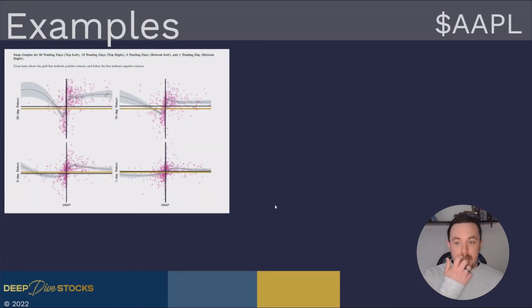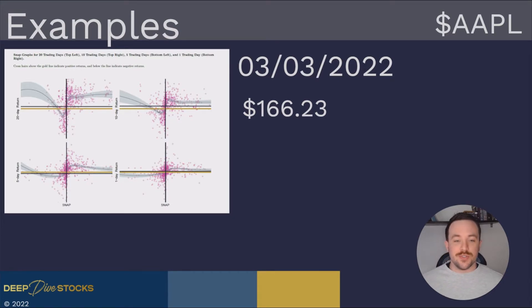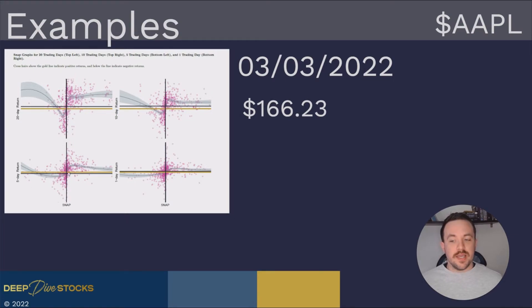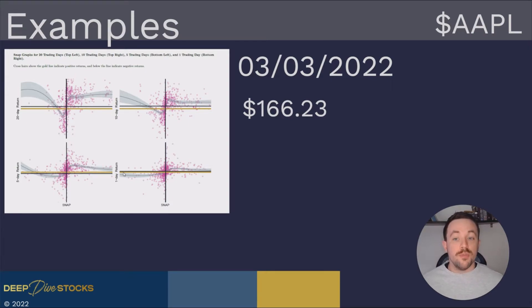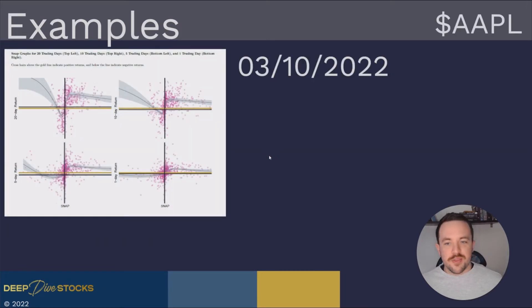Now let's look at an example using Apple. On March 3rd, the closing price was $166.22. We see a positive prediction on the one-month (20 trading days) snap because the crosshair is above the gold line. The two-week snap also shows a positive prediction. The one-week snap suggests probably negative returns, but the one-day snap shows a positive prediction. The trend line is well established and the 95% confidence interval is well confined to either positive or negative quadrants throughout.